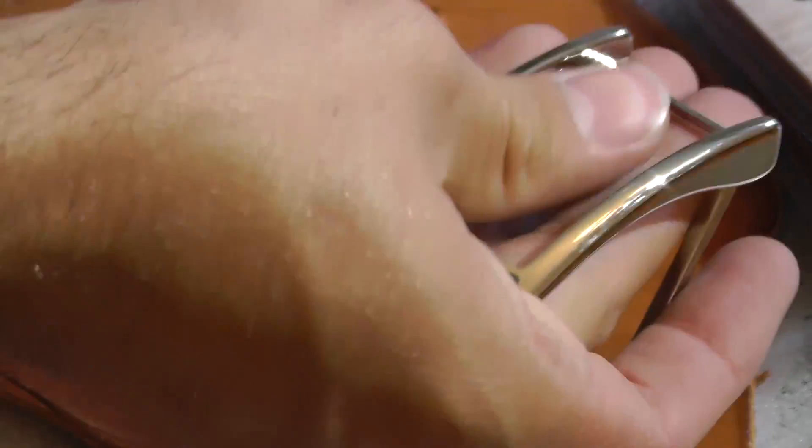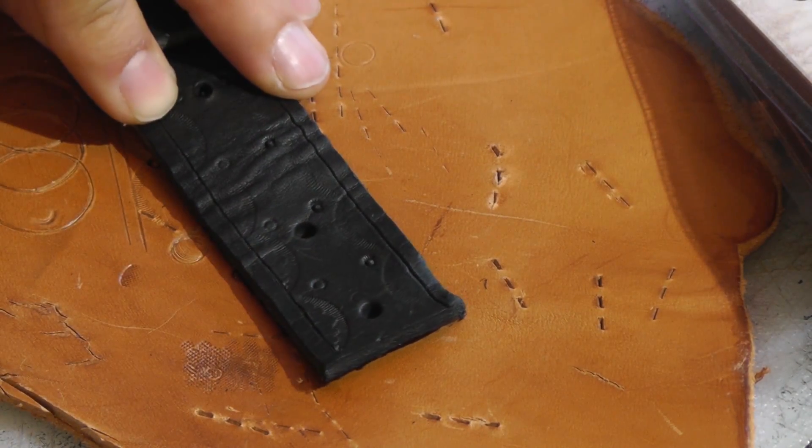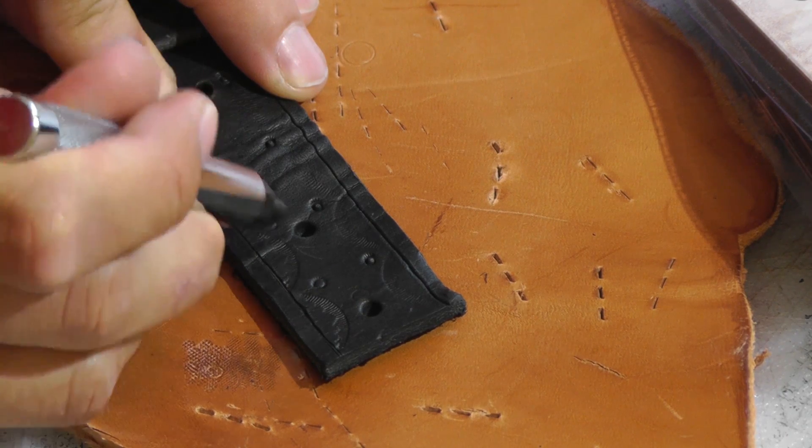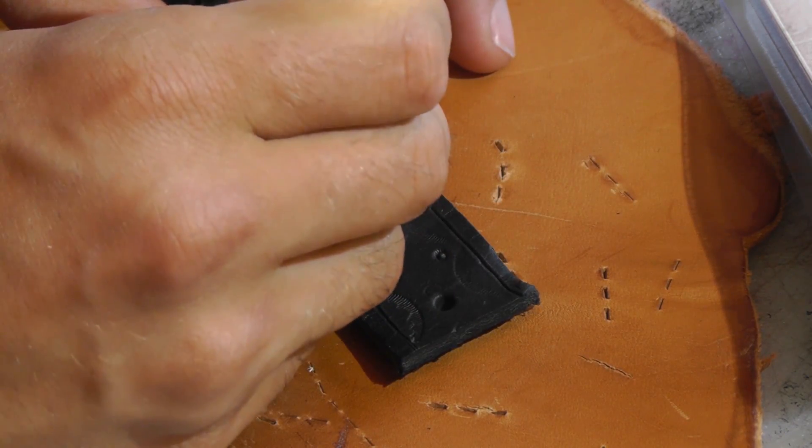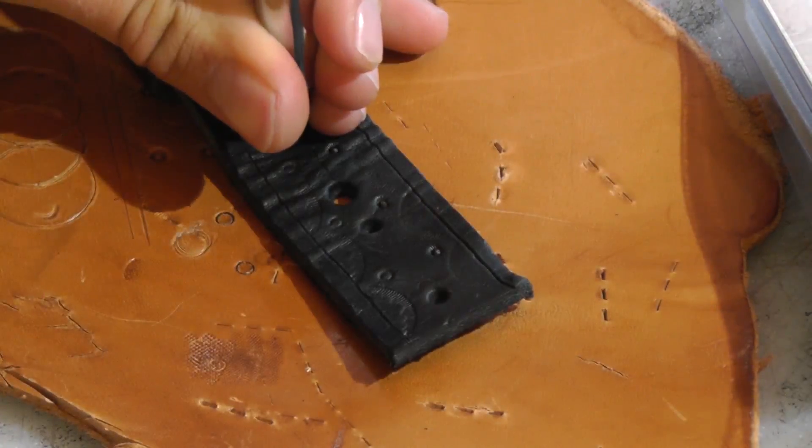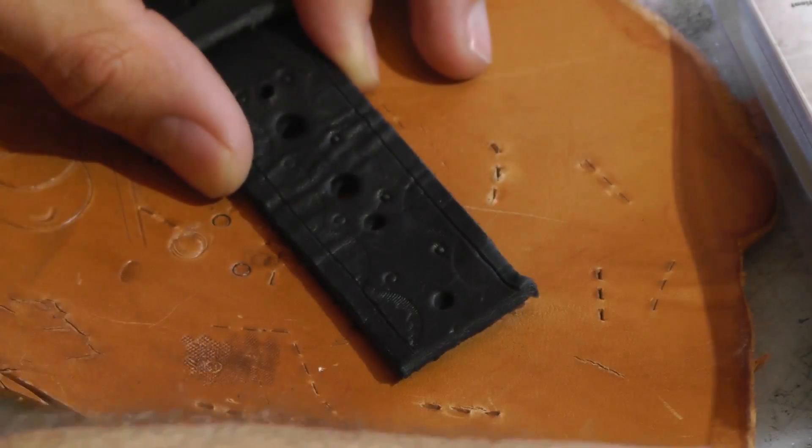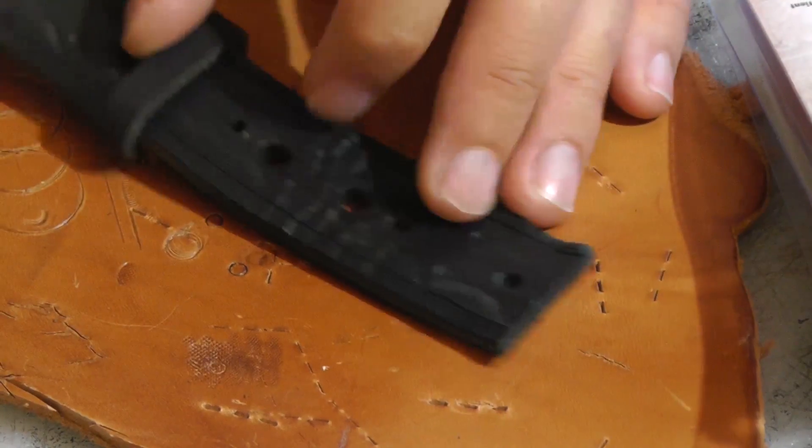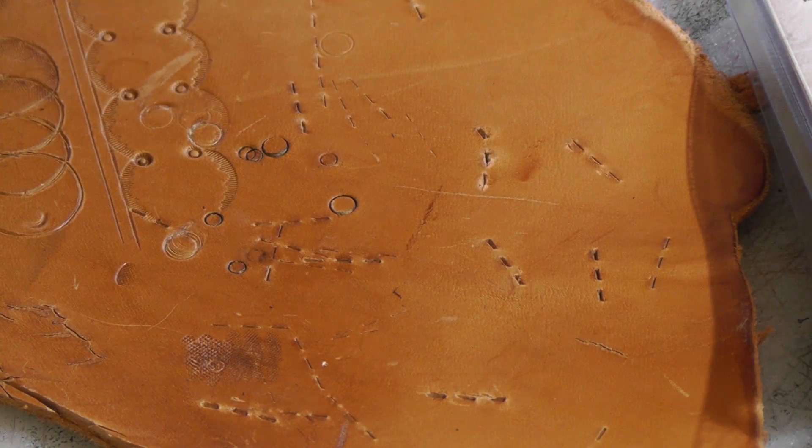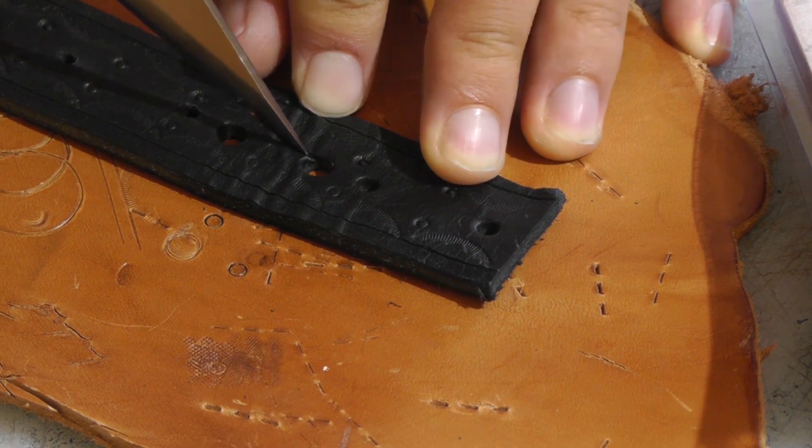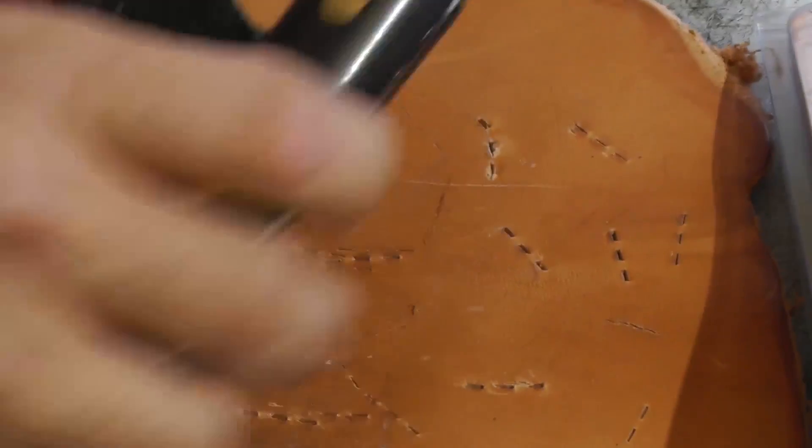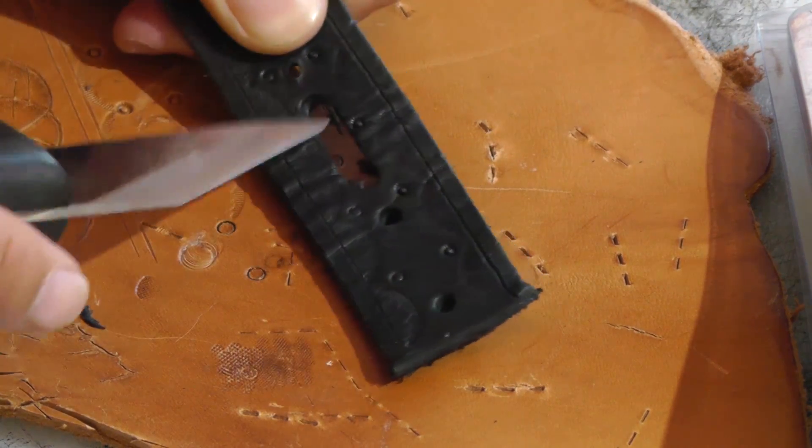So now the next step is cutting a hole for your belt buckle to go through. And the way I like to do that is first I cut two holes in between and then use my knife to slice through. So now that I've punched these two holes out, I can use my knife and cut in between. It's a nice hole I've cut there. So I'm just going to clean it up a bit.